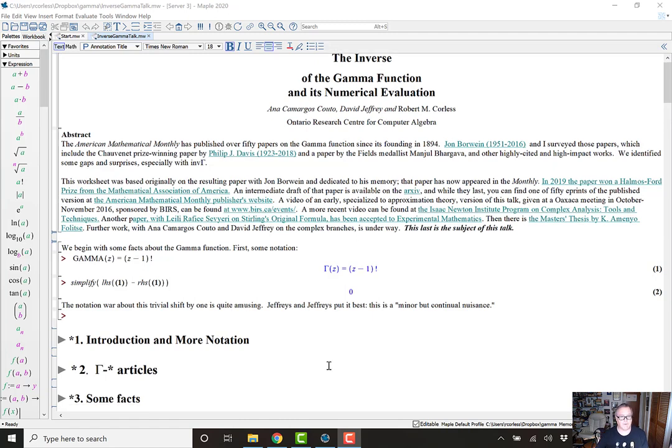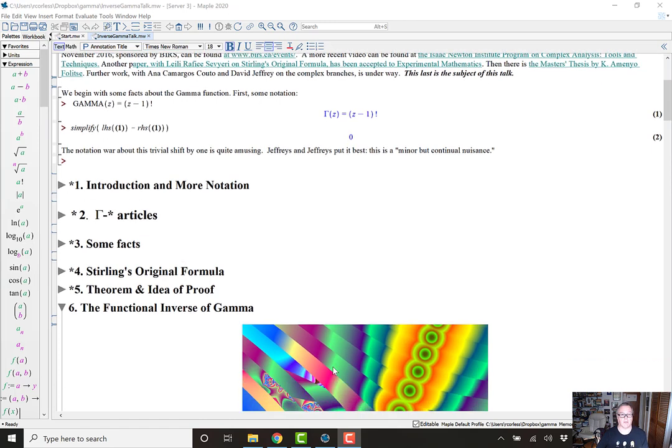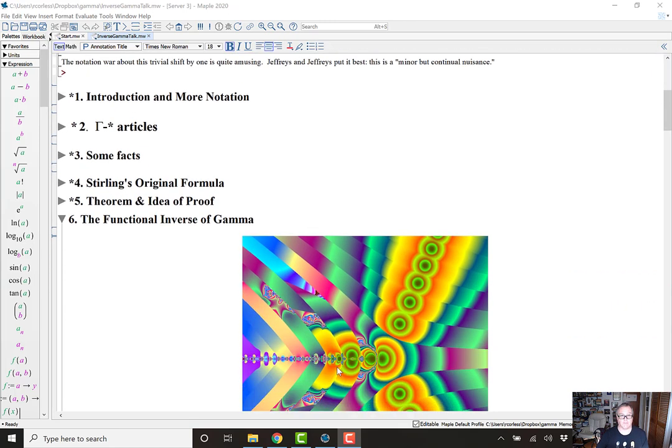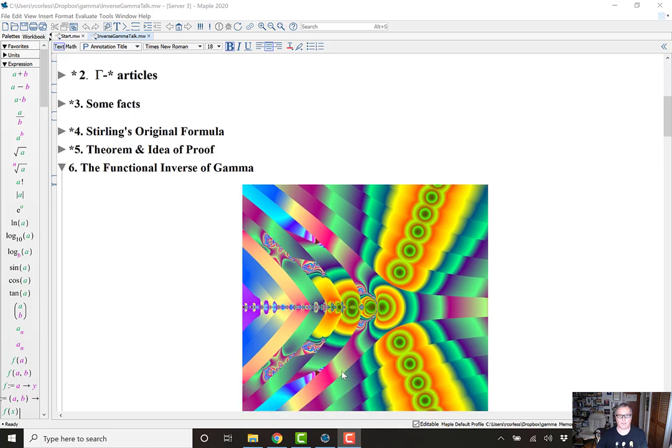So I'm going to skip over the introduction about the gamma function, but it's present in the Maple worksheet that will be shared with this talk. And there's some discussion about the other articles in the article in the monthly. And I particularly want to mention the Chauvenet prize winning paper by Philip J. Davis published in 1959 and also a paper by Manjul Bhargava, the Fields Medalist. So there are some very interesting things to read in the American Mathematical Monthly about gamma function. There's a million facts about the gamma function and Stirling's original formula and our theorem. And I'm just going to skip over that.